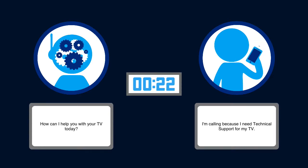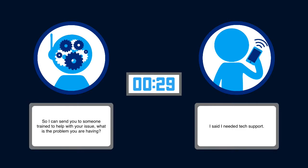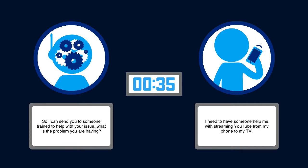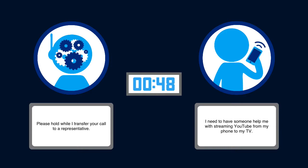The system asks: how can I help you with your TV today? The caller responds: I said I needed tech support. The system continues: so I can send you to someone trained to help with your issue, what is the problem you are having? The caller says: I need to have someone help me with streaming YouTube from my phone to my TV. The system replies: I can get someone to help you with your TV. Please hold while I transfer your call to a representative.